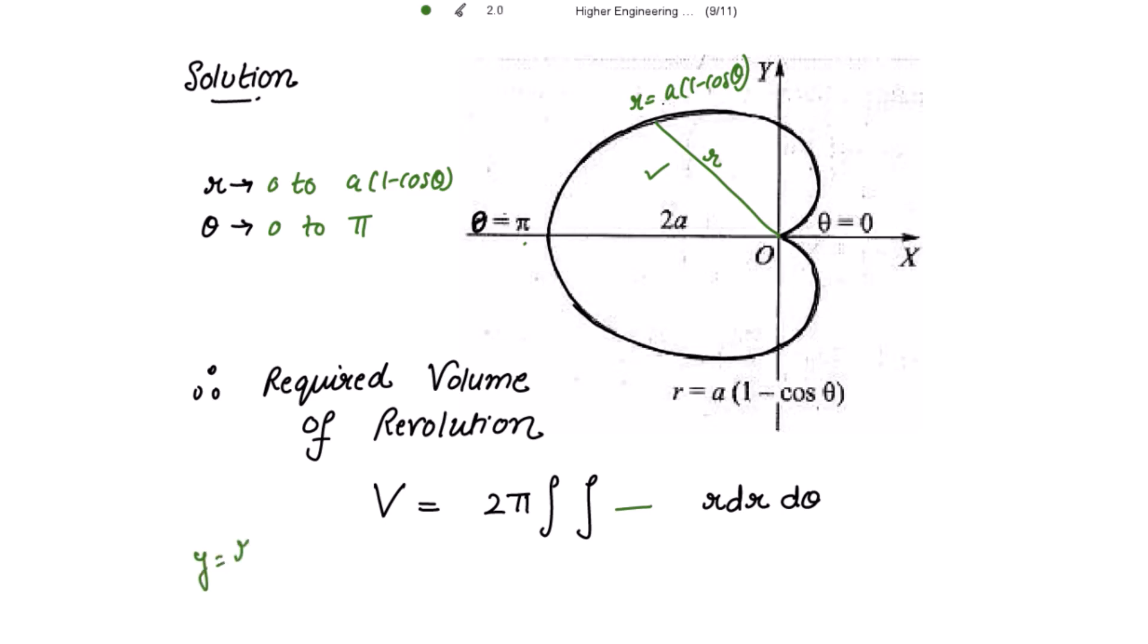Y is r sin theta. So I am writing here instead of y as r sin theta and it is multiplied with r dr d theta.